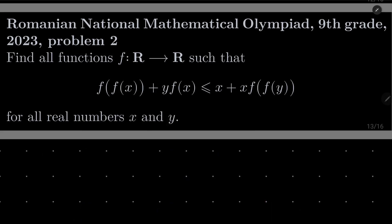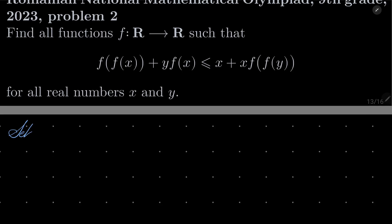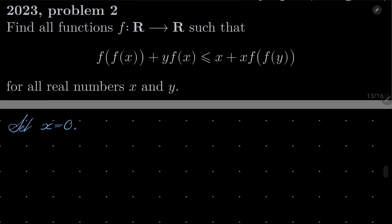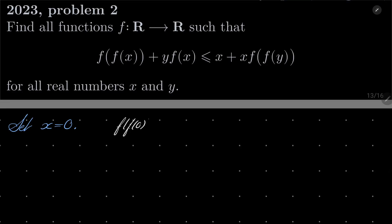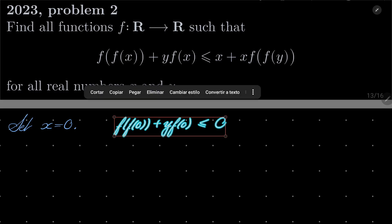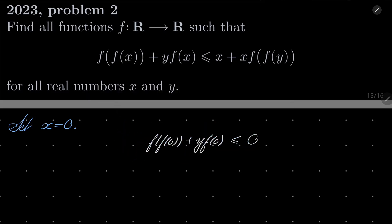Okay, so here is my solution. As I suggested, let's start by setting x to be 0. What do we have now? We have f(f(0)) + y·f(0) ≤ 0, and crucially, that is true for all real numbers y. Now, if f(0) were not 0, then we could have arbitrarily large values on the left-hand side, so it won't be less than or equal to 0 every time. The only possibility for that to be true is that f(0) must be 0.